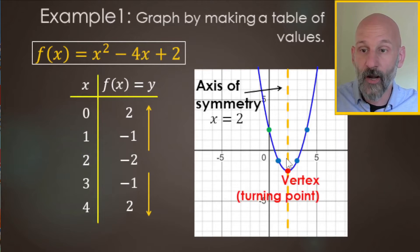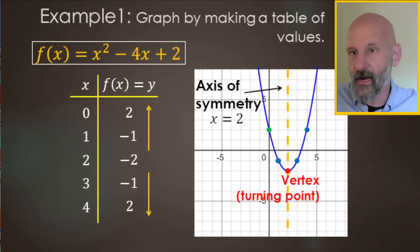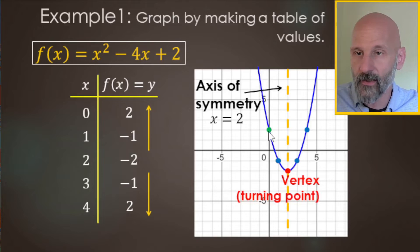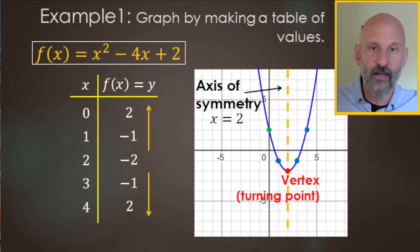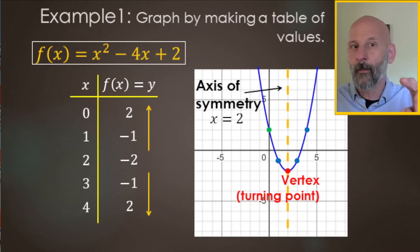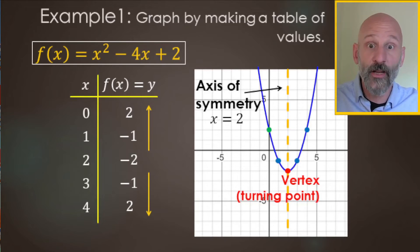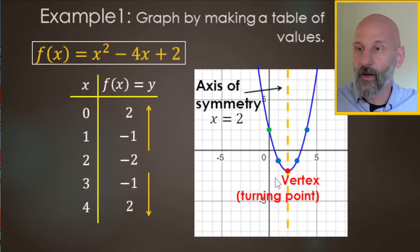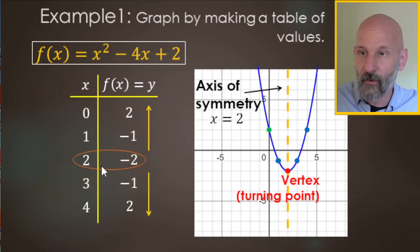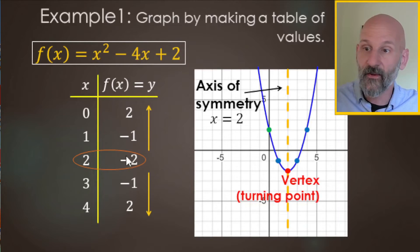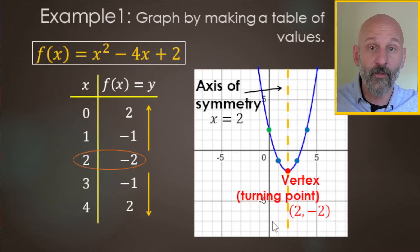At the very bottom of the graph, it goes from going down to going up — that point is called the vertex, or turning point. The vertex shares the same x-value as the axis of symmetry, which is x = 2. The corresponding y value is negative two, so the vertex coordinate is (2, -2).